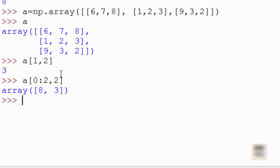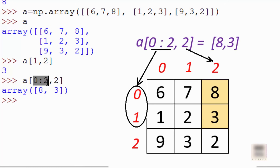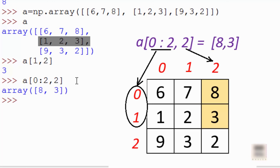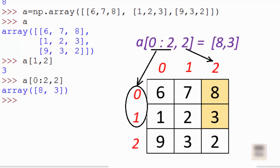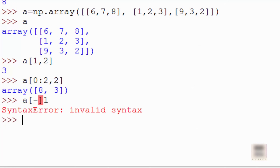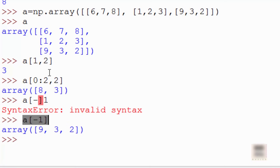When you do something like a[0:2, 1], it will go through rows 0 to 1 (the upper bound is not included), and then print the second element of each of those rows. In these two rows the second element is 8 and 3, so that's what it prints. You can also use minus-1 indexing.